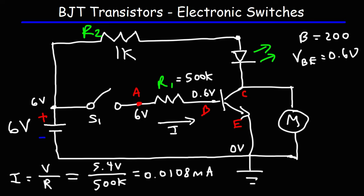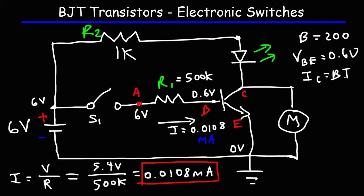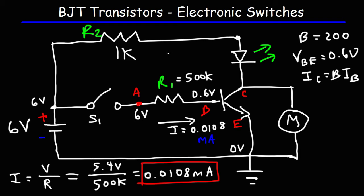Now that we know the base current IB, we can use beta to calculate the collector current IC. The collector current is equal to beta times the base current — so it's going to be 200 times 0.0108. The current flowing through R2, through the LED, and to the collector — that is the collector current — is equal to 2.16 milliamps. It's just beta times the base current.